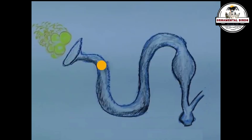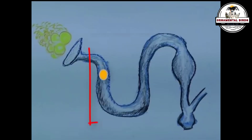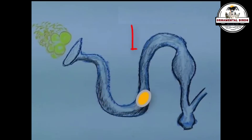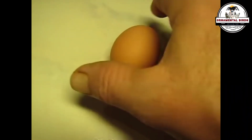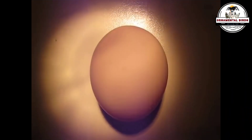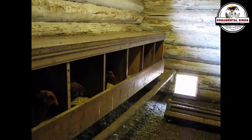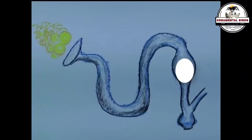Even if an ovum is not fertilized, the hen will continue the process of egg formation. The ovum will travel through the oviduct where the different layers are added: the albumin or egg white, the internal and external membranes, and finally the protective shell in the uterus. That's why the hen can continue laying eggs even if there hasn't been a rooster present.